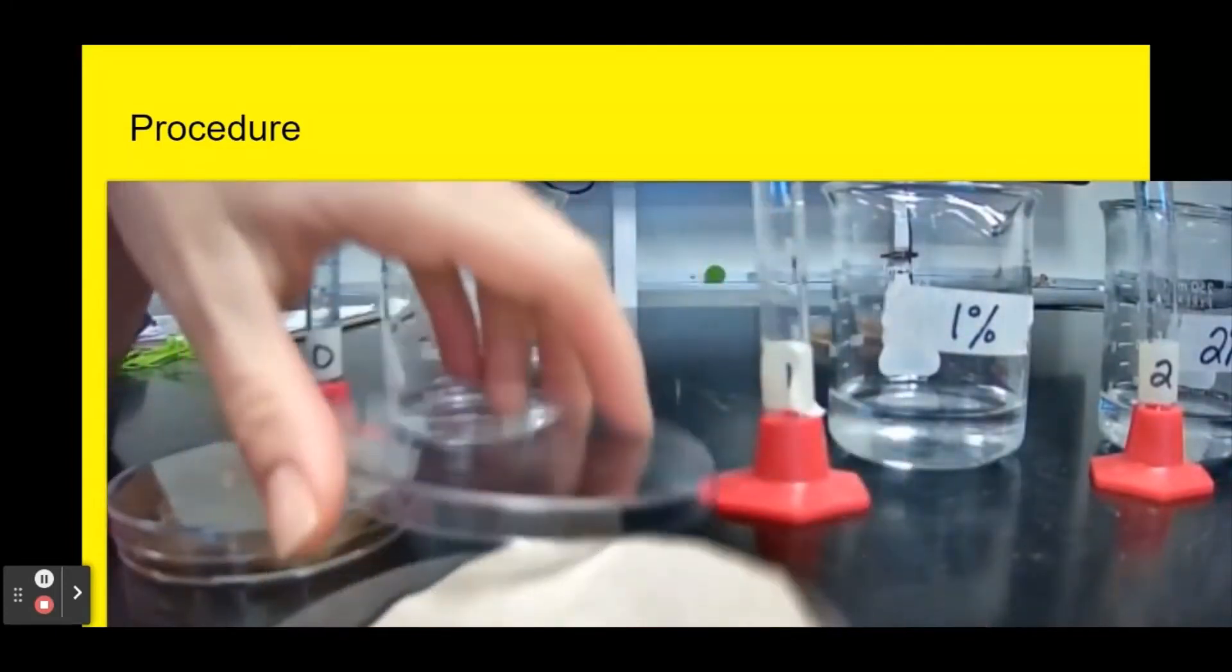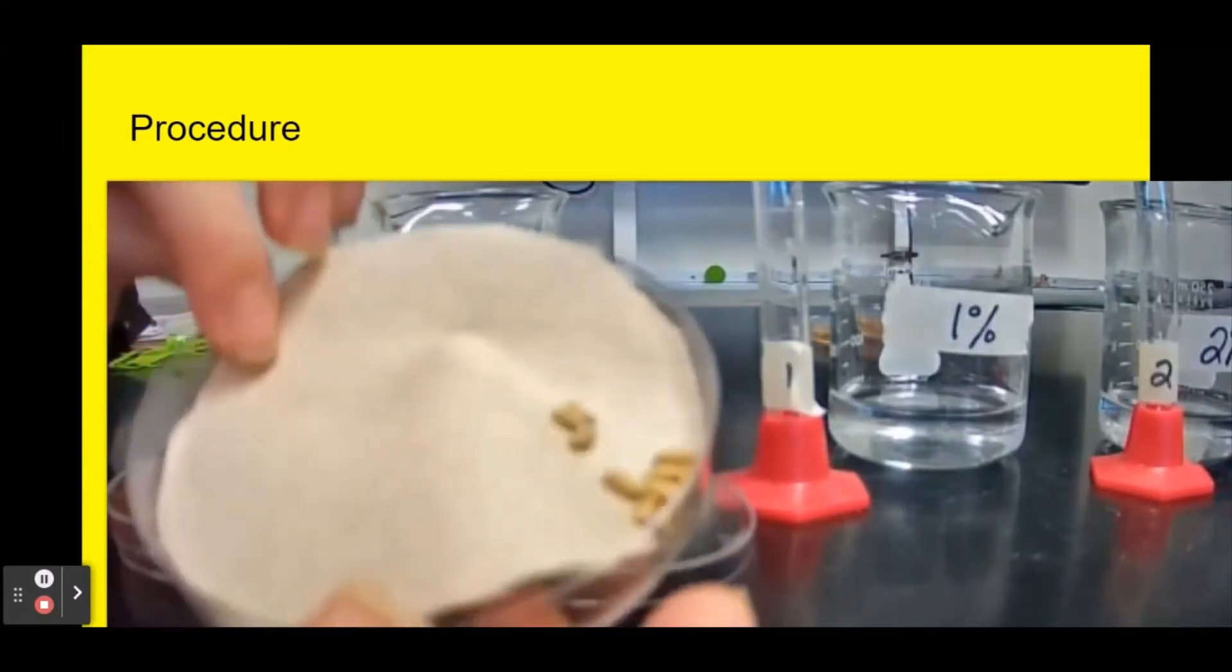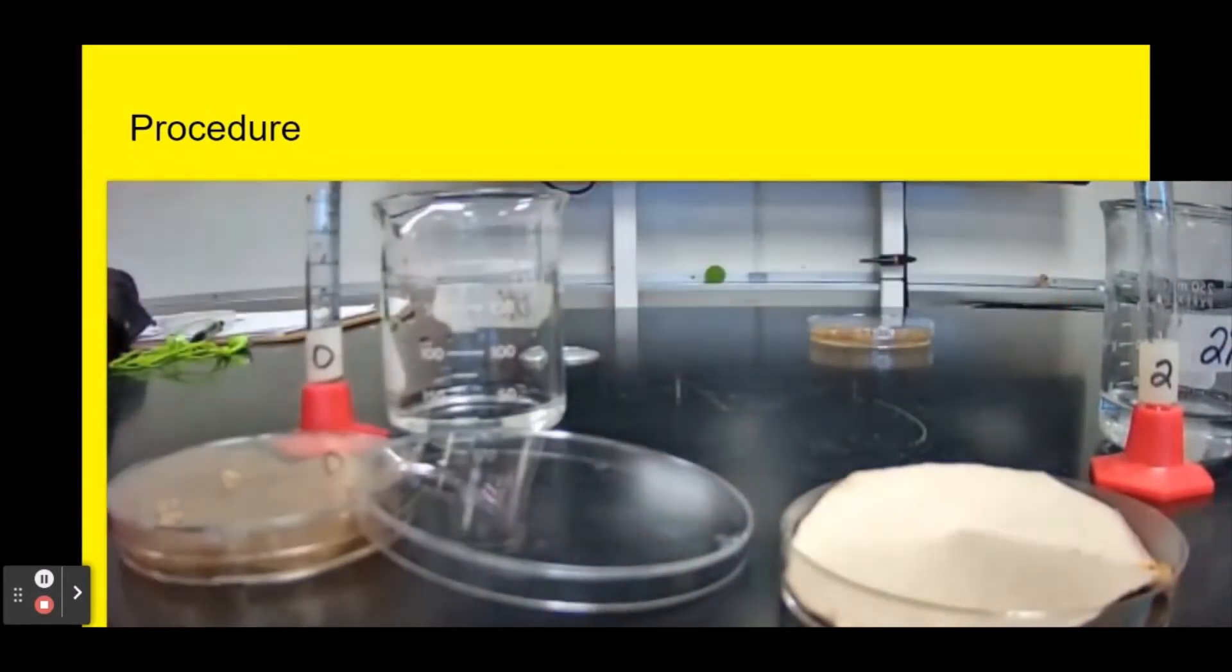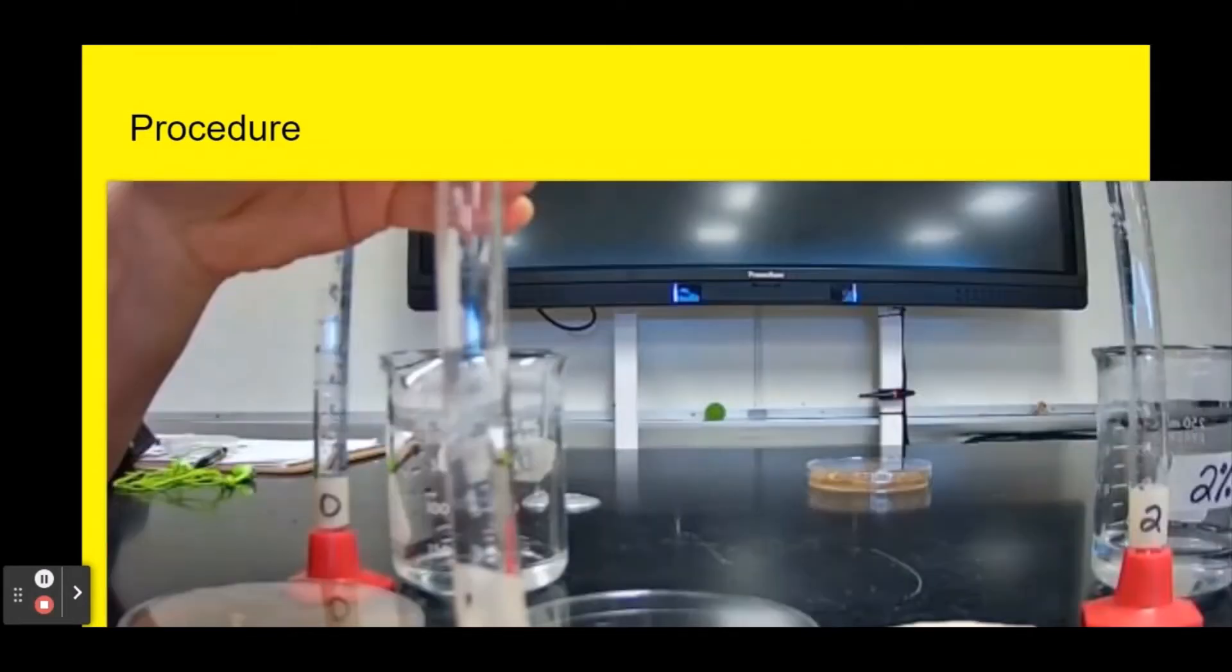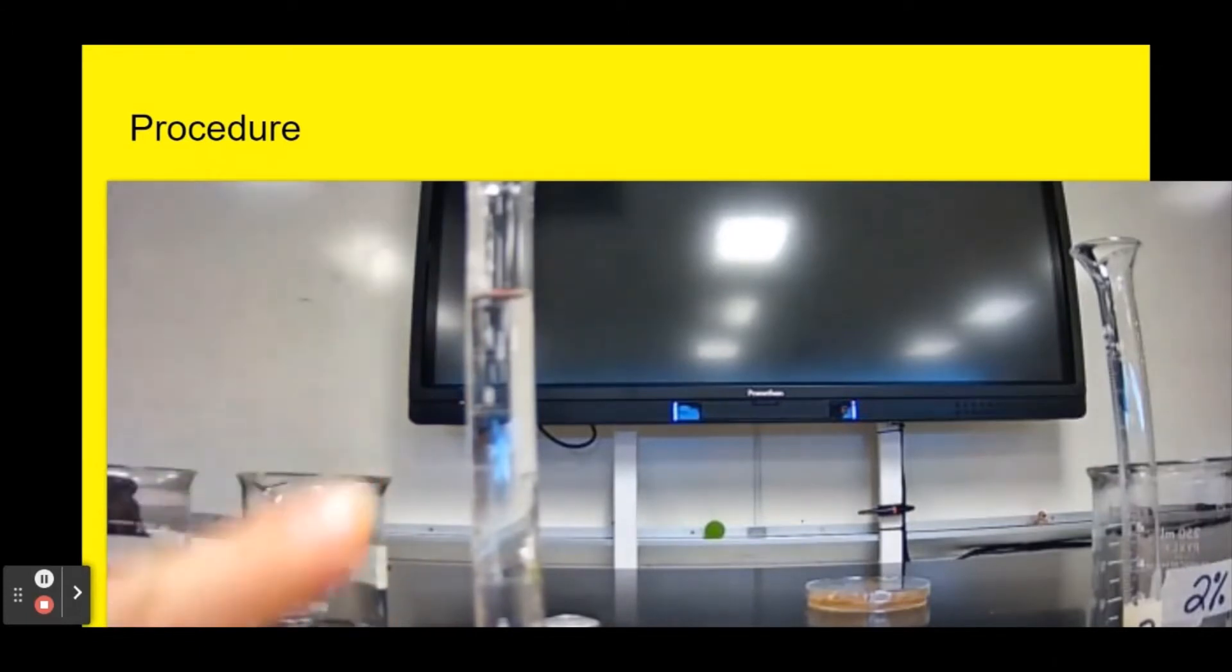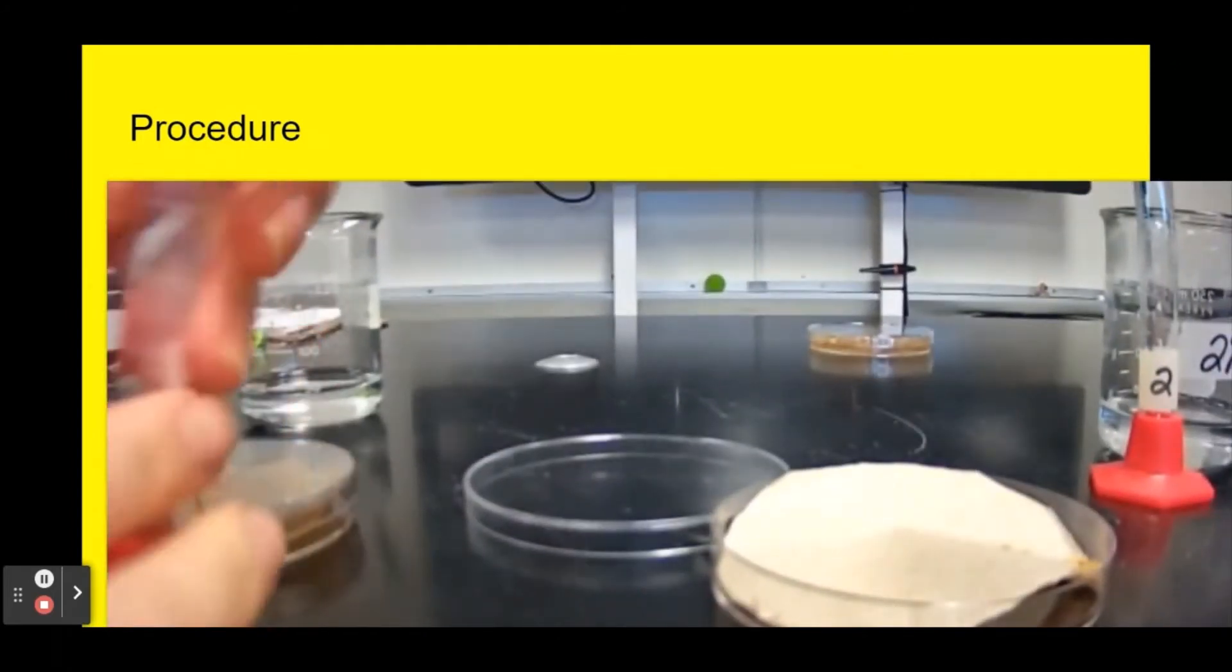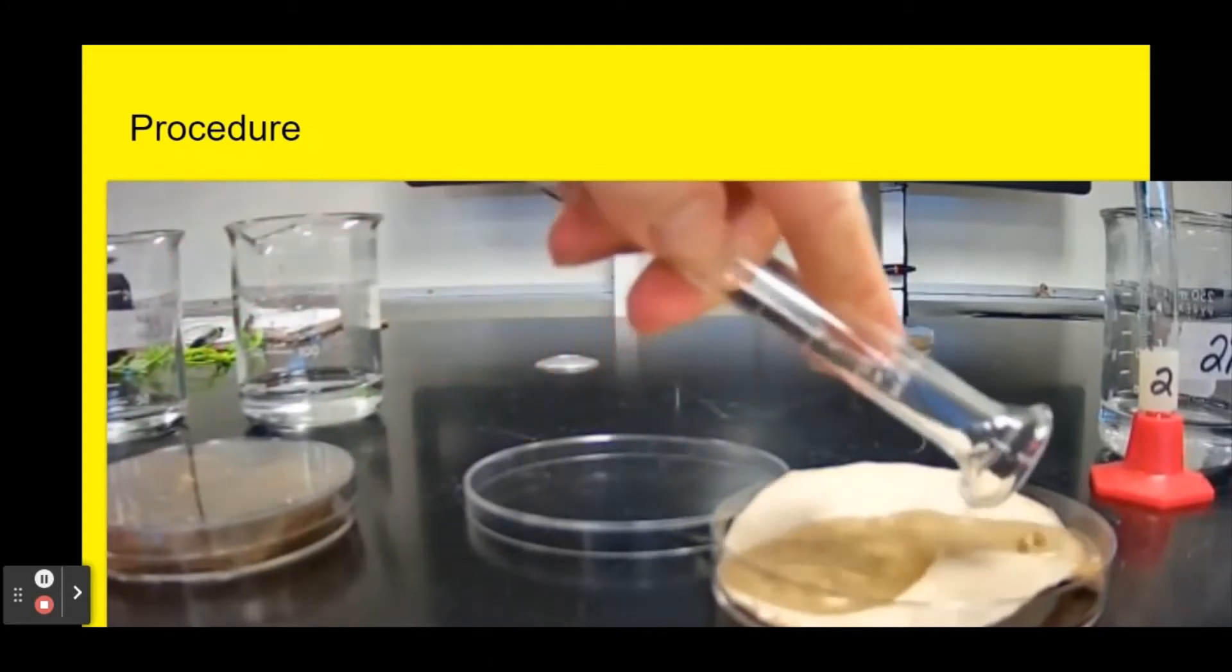I'm now going to do the similar setup for my one percent solution. You'll see I've got my tray with two paper towels and 10 seeds and I'm going to fill it up to 10 milliliters. The bottom of the meniscus is at 10. This is 10 milliliters of one percent acid and I'm going to pour that on my paper towel.